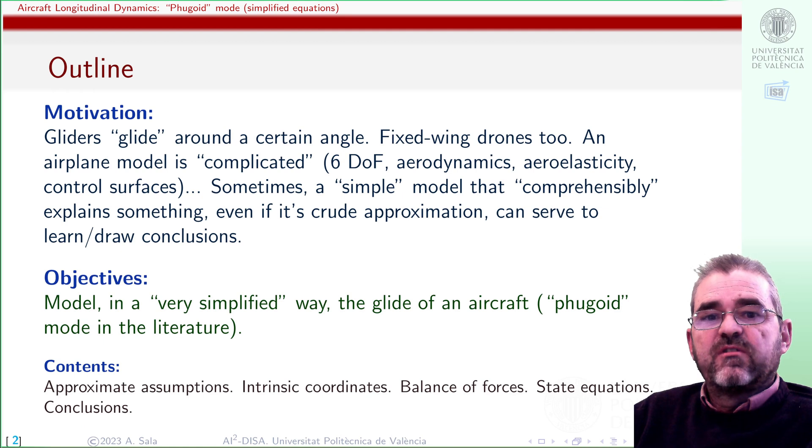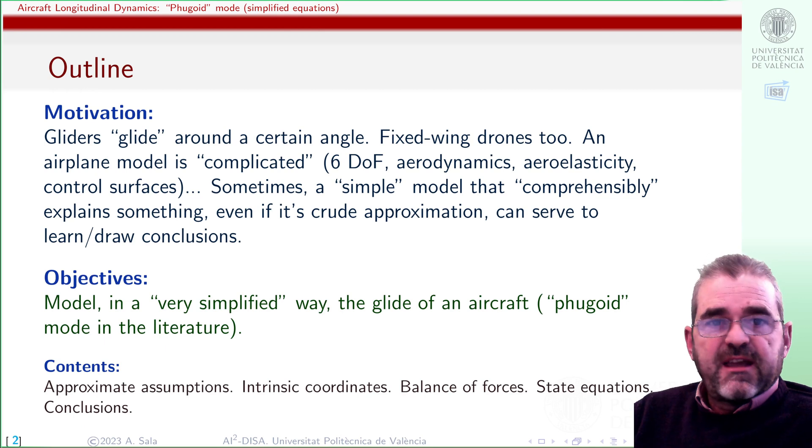However, the full model of an airplane needs 6 degrees of freedom, rigid body mechanics, aerodynamics, aeroelasticity. We may need to study three semesters of flight dynamics or fluid dynamics before fully understanding everything, but in this video we are aiming to get a crude simplistic model that captures in a comprehensible way the essence of this fugoid gliding.